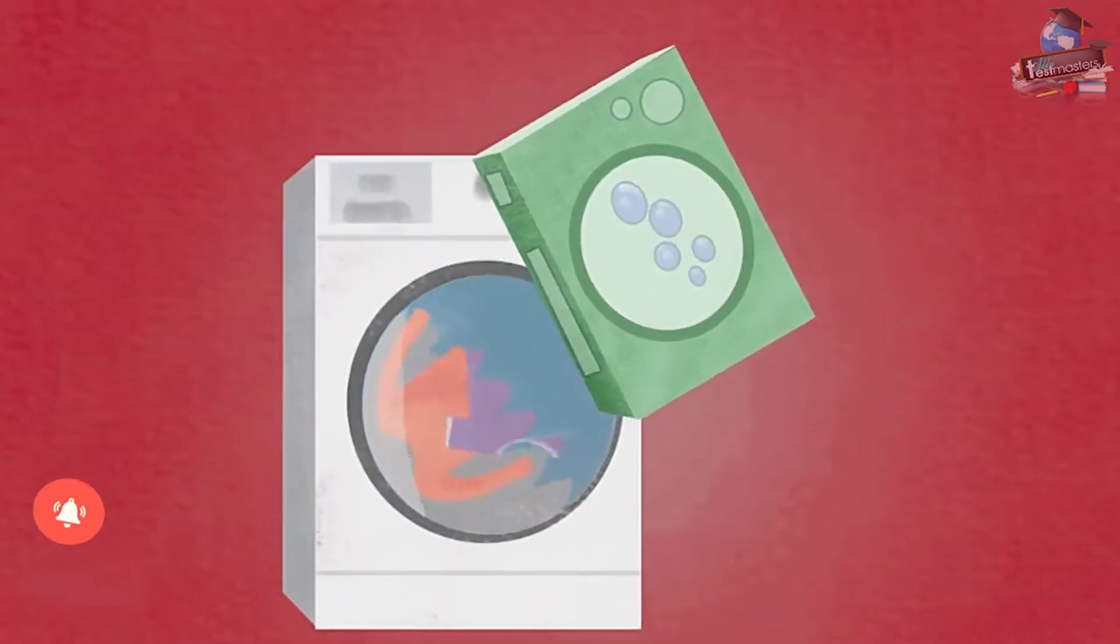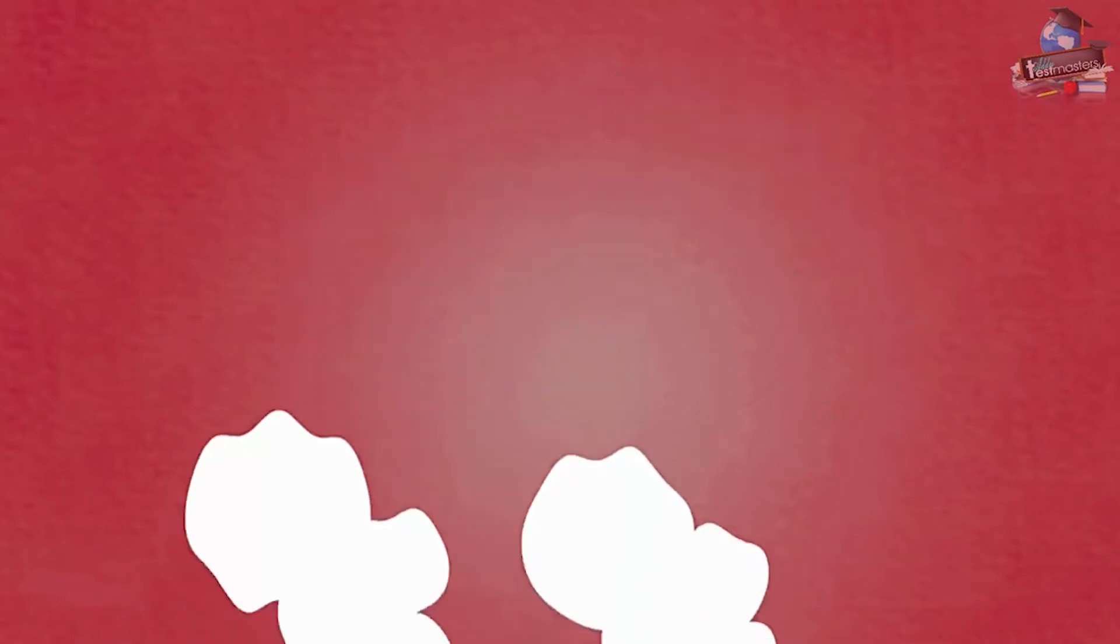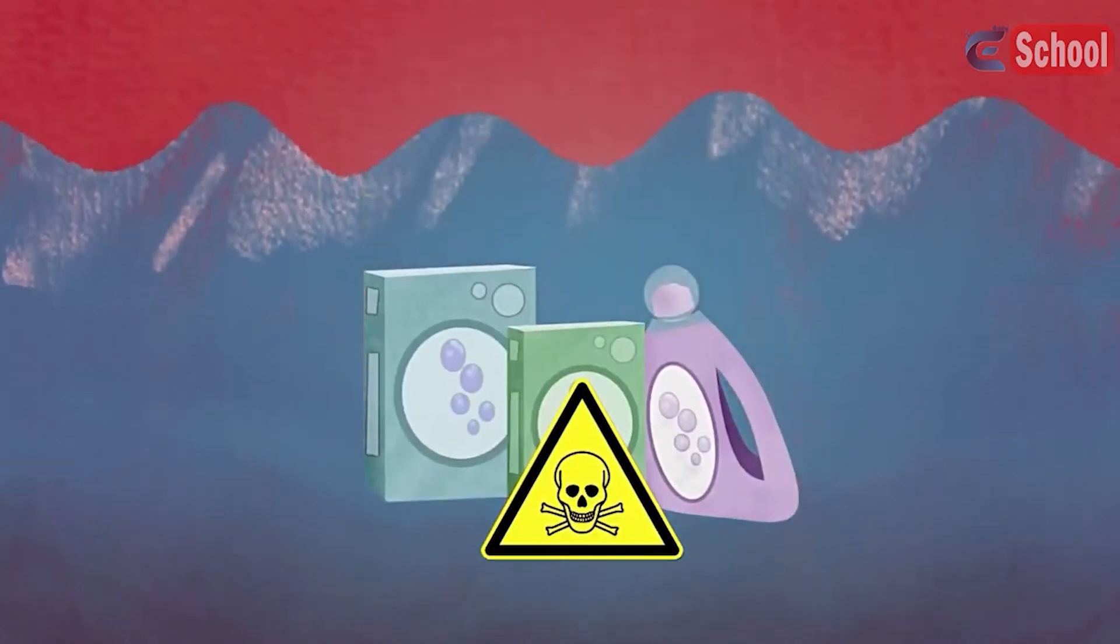Yet before detergent makes it to a washing machine, it has to be manufactured, and that's where the environmental concerns lie. The chemicals found in detergents are toxic to aquatic organisms.